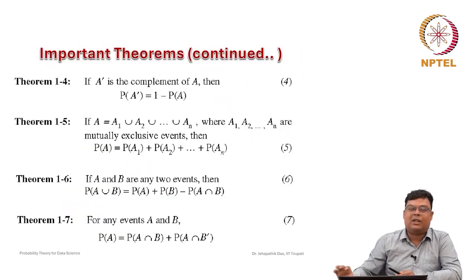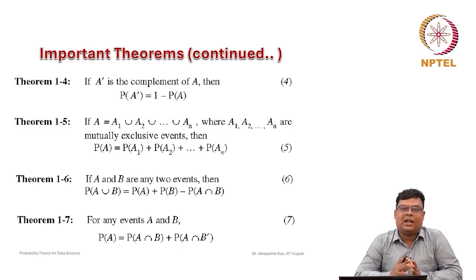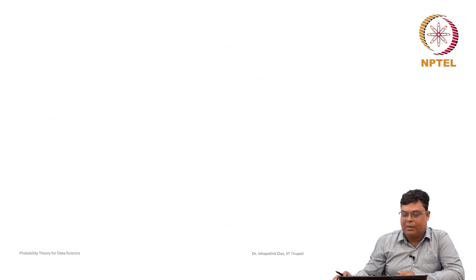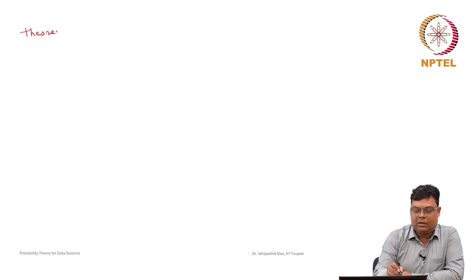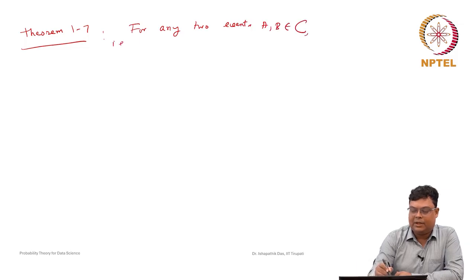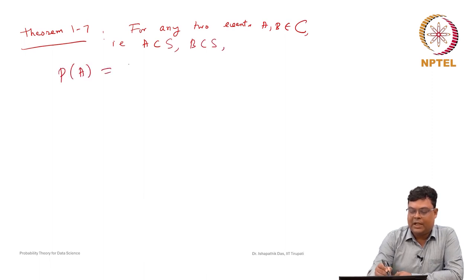Now this is the last theorem — there may be many results, but these are some of the basic results that we think will be frequently used in the future. Other results, whenever required, we will again discuss and prove. Theorem 1.7 states: for any events A and B, probability of A equals probability of A intersection B plus probability of A intersection B complement.